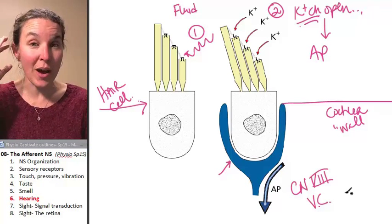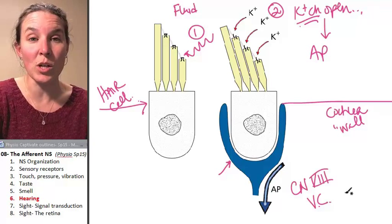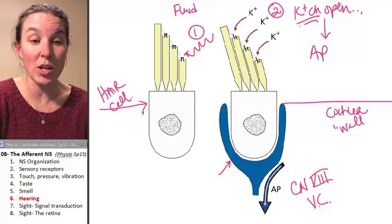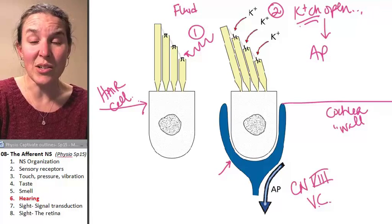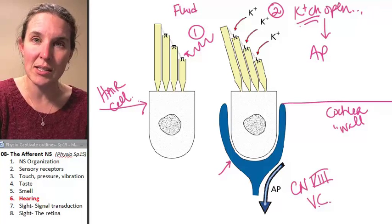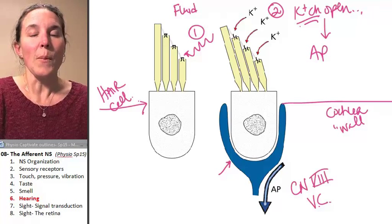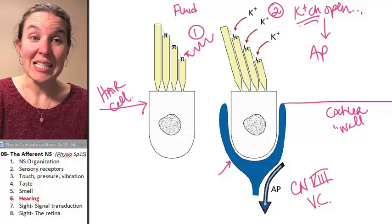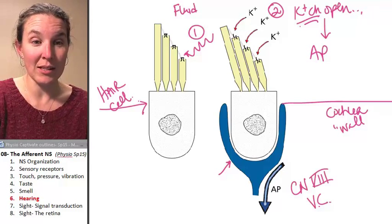Also in your ear, you have the semicircular canals, another fantastic mechanism. Don't you wish we had like a year to spend just on sensory mechanisms? Because it really is interesting to compare all these different ways that stimulus gets turned into an action potential. So the last thing we're going to talk about is sight because sight is pretty amazingly complicated.